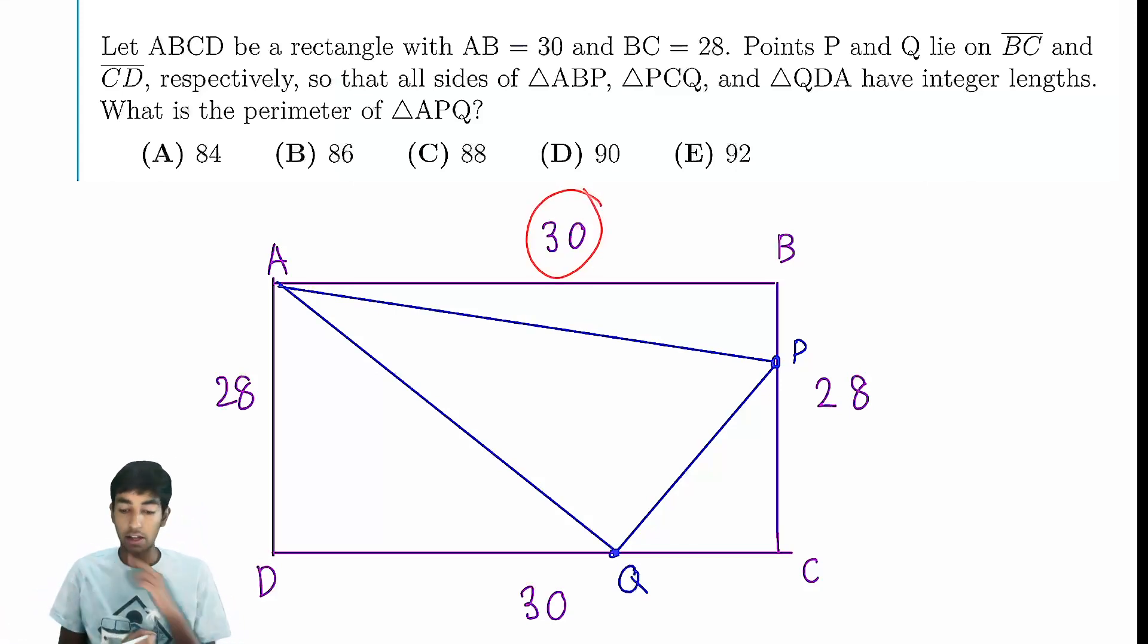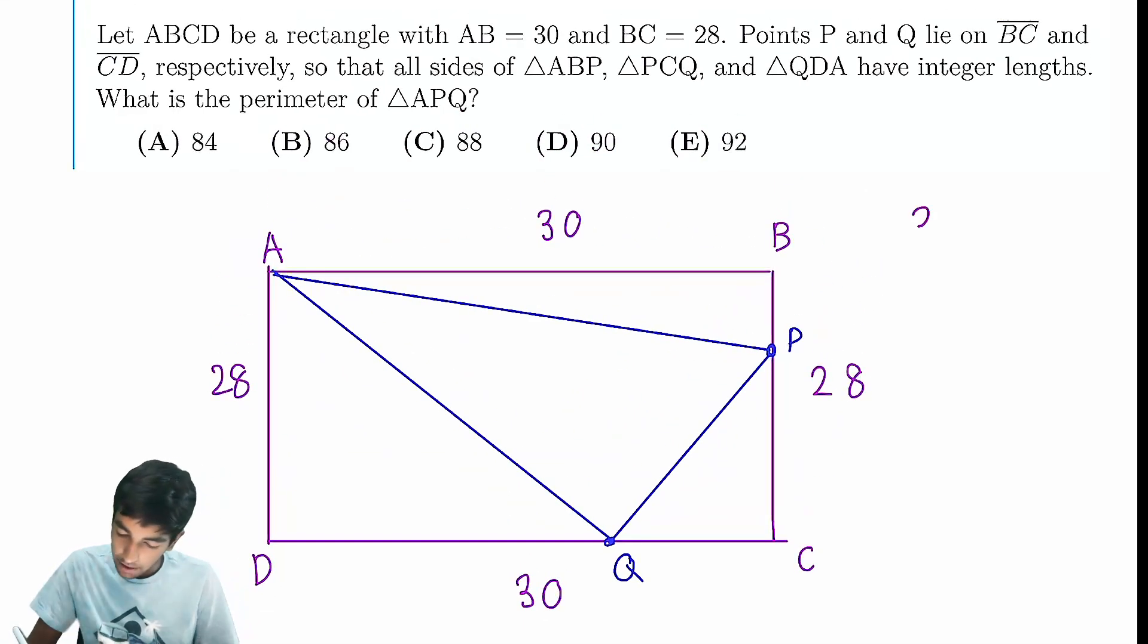First, we look at 30. 30 is a leg in a Pythagorean triple. Looking at the factors of 30, what are the possible Pythagorean triples that have some factor of 30 in their side lengths?